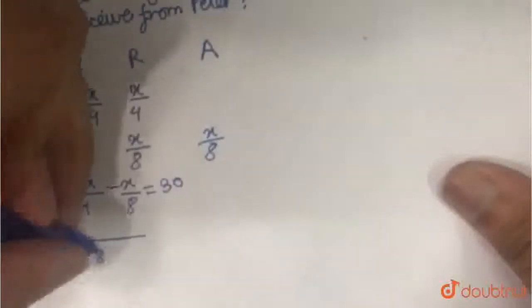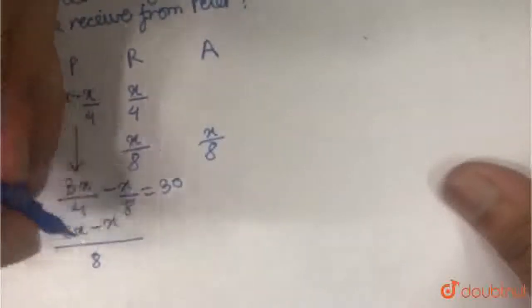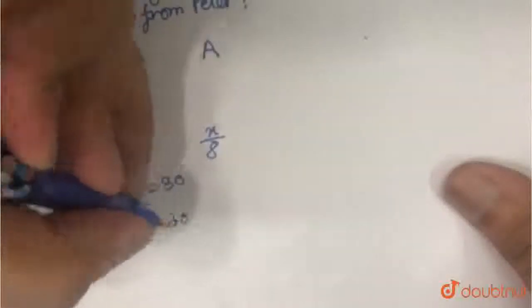So 3X by 4 minus X by 8 is equal to 30. So if we calculate this, we take 8 as the denominator. So 6X minus X upon 8 is equal to 30. So 5X upon 8 is equal to 30.